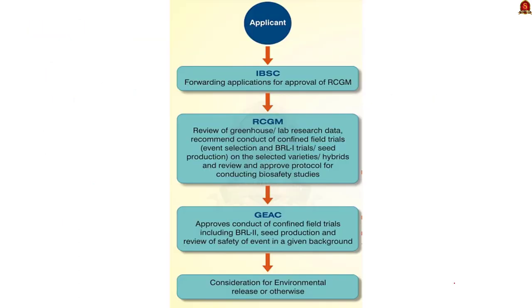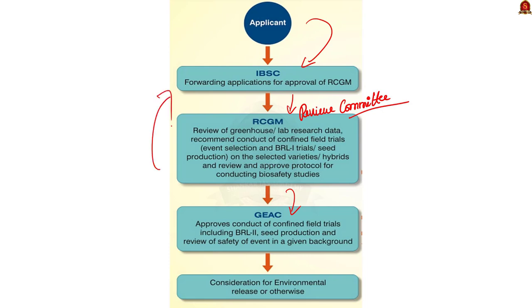Have a look at this flowchart showing the procedure for approval of GM crops. The applicant gives an application to the Institutional Biosafety Committee, which forwards it to the Review Committee on Genetic Manipulation. This committee reviews the data and gives approval for biosafety studies. After this, the Genetic Engineering Appraisal Committee gives approval for field trials, and then approval for environmental release is considered. If the committee finds the variety suitable, the Genetic Engineering Appraisal Committee will give approval for commercial release.